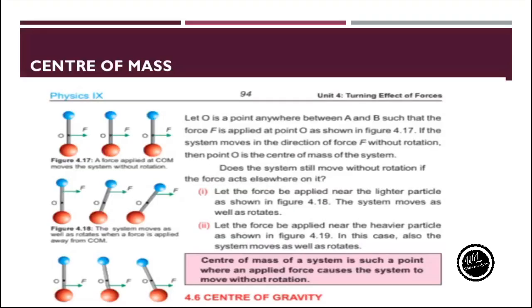The next topic is center of mass. Consider a system of particles A and B connected by a light rigid rod, as shown in the figure. In a system of particles we have an equilibrium point, and that point is known as the center of mass. The equilibrium point is the point where the body is balanced, or where it will not produce any turning effect.